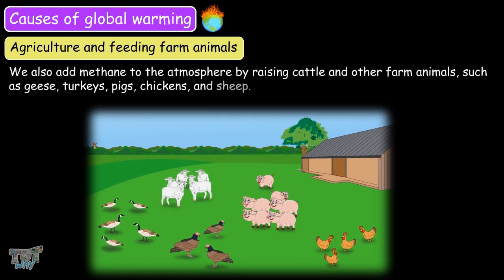We also add methane to the atmosphere by raising cattle and other farm animals such as geese, turkeys, pigs, chickens and sheep.